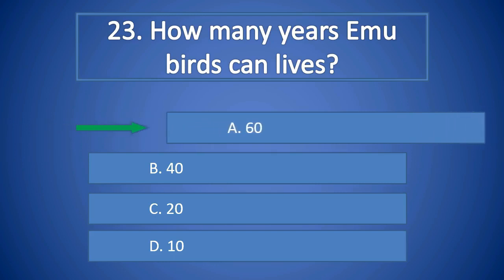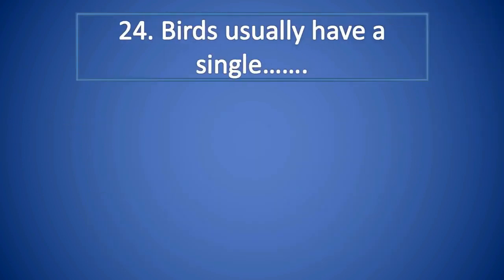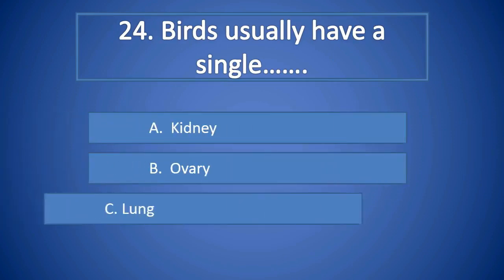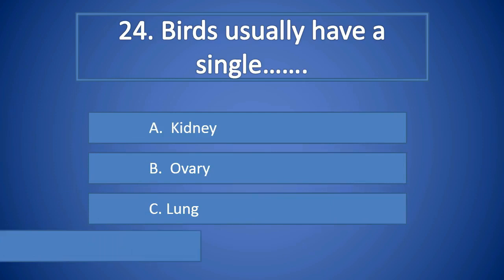Question Number 24: Birds usually have a single A. Kidney, B. Ovary, C. Lung, D. Testis. Right answer is B. Ovary.